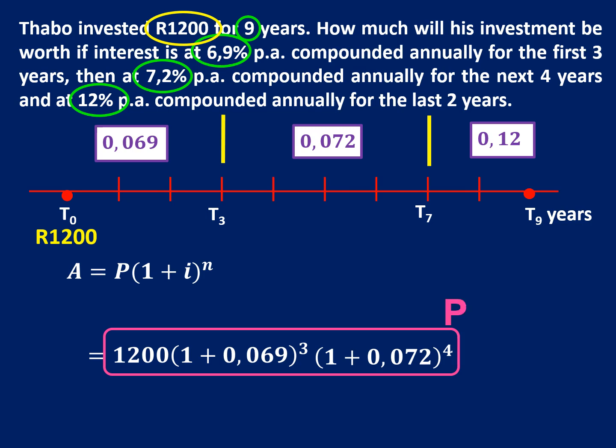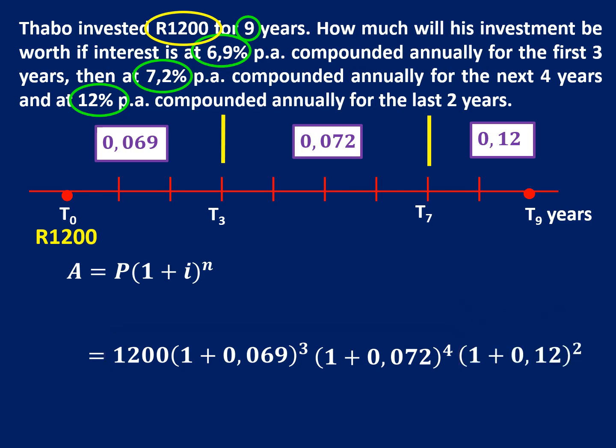What comes next is the last interest bracket: (1 + 0.12) to the power of 2, for the last two years. So every time there's a change in interest, just include another interest bracket for that time period. We type that into our calculator and R1,200 will grow to R2,428.45. Every time there's a change in interest, instead of pushing equals and starting over, just put down the new interest bracket with the new number of years.